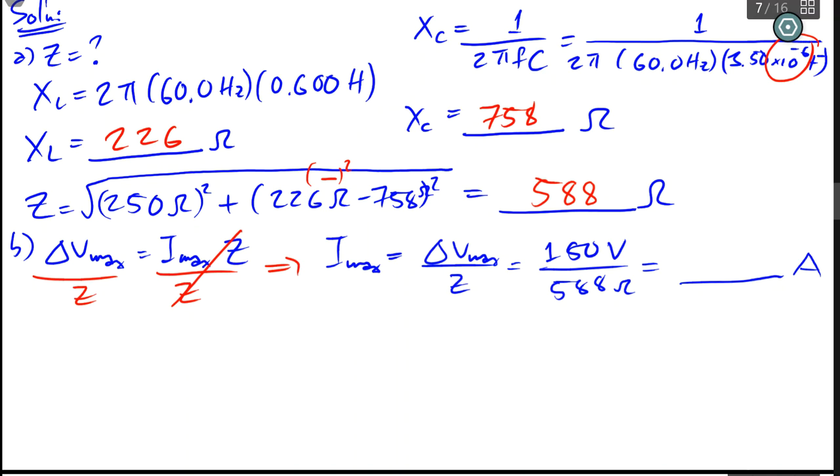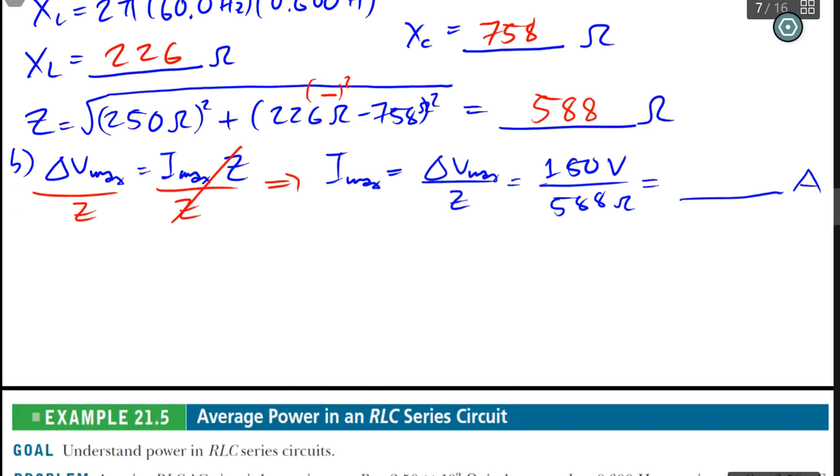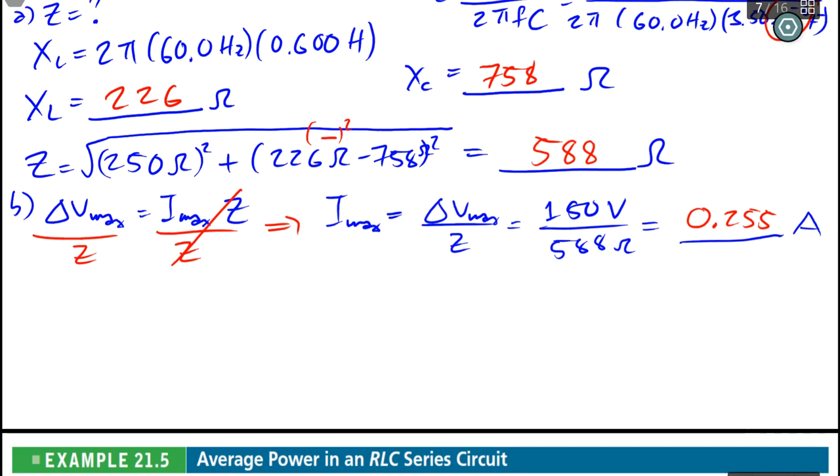And as you can see, just by analyzing this, bigger number on the bottom, smaller on top, results in something less than one. And sure enough, our current is almost a quarter, 0.255 amps.